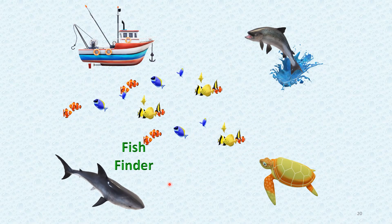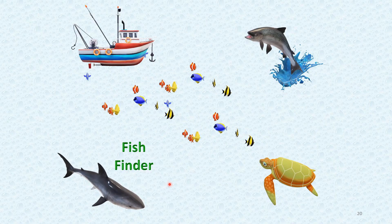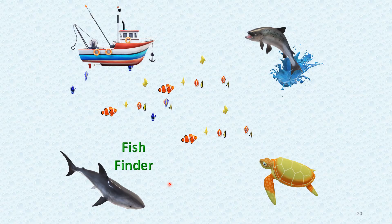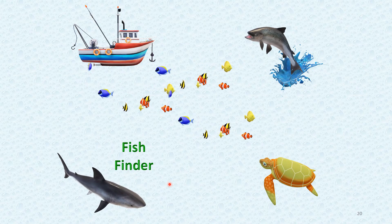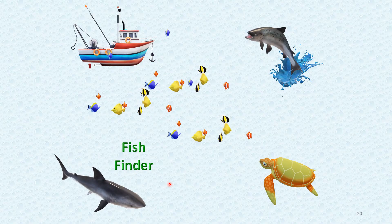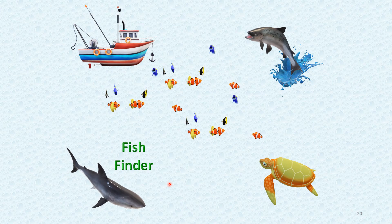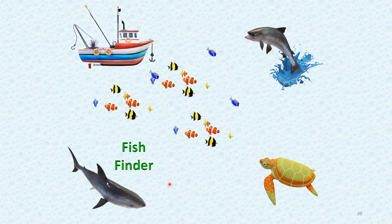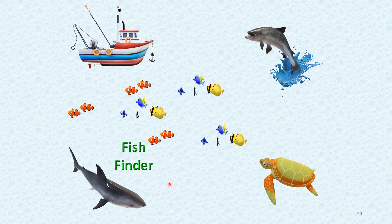When a submarine or ship propagates through the sea, there are chances of accidents if fish or other living creatures come into the path. To enable proper propagation of submarines, the fish finder technique is used. The fish finder technique is very similar to the sonar technique and follows the same principle. Fish finder is thus one of the applications of ultrasonic sound waves.